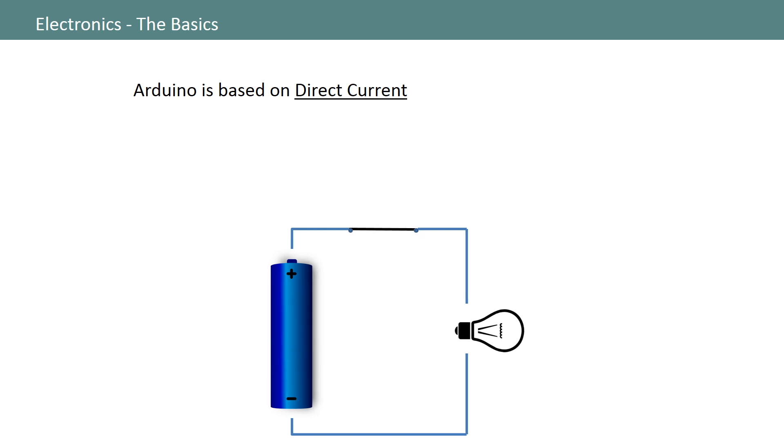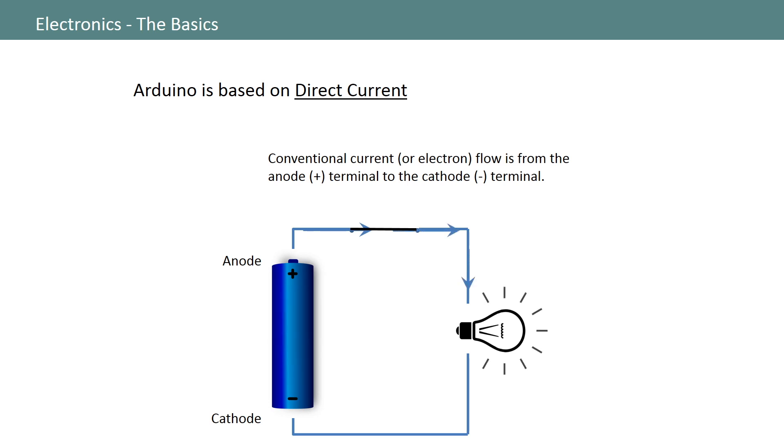The conventional model of current flow tells us that when we close this switch, electrons from the battery will flow from the anode, or positive terminal of the battery, through a small filament in the light bulb into the cathode, or negative terminal of the battery, also known as the ground.